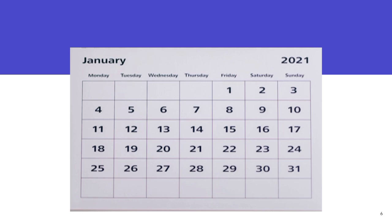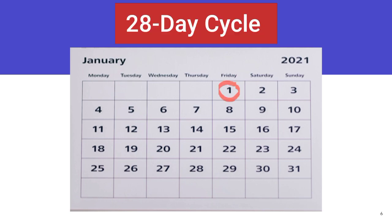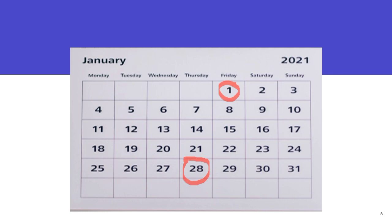On the other hand, if she starts on the 1st of January and another round of menses starts on the 28th of January, the length of this woman's cycle is 28.